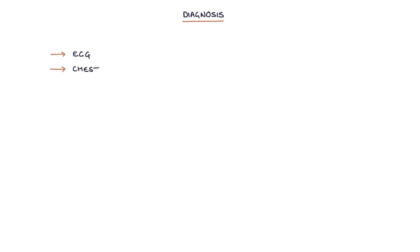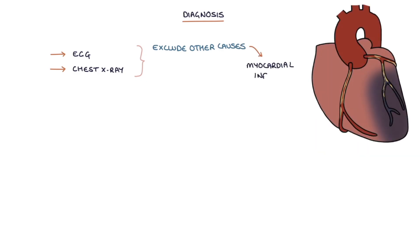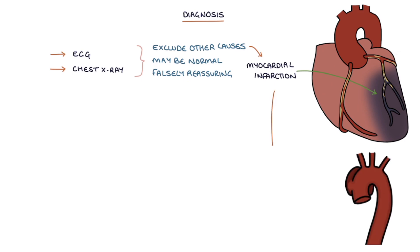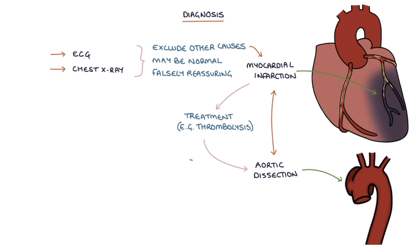Let's talk about the diagnosis. An ECG and a chest X-ray are often used to exclude other causes such as myocardial infarction, although they may be normal or falsely reassuring in aortic dissection. A myocardial infarction can occur in combination with aortic dissection, and treatment of the MI — for example thrombolysis — can cause fatal progression of the aortic dissection, as stopping blood from clotting can cause bleeding and worsening of the condition.